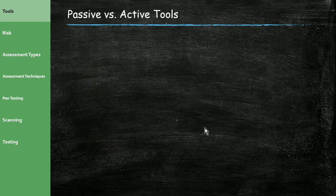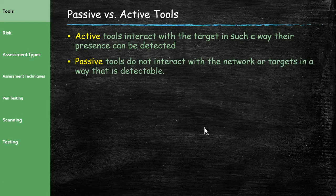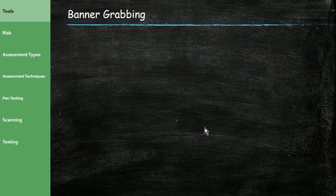Some tools are active, meaning they interact with the target — which can be detected. An intrusion detection system should detect something like a port scanner because it's invasively interacting with systems on the network. A passive tool, on the other hand, like a packet sniffer, is difficult to detect — you're just sitting in a corner listening to traffic. Both active and passive tools have their uses.